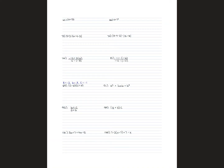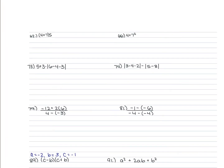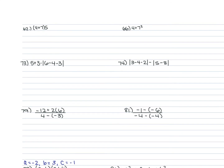For the next set we're simplifying expressions using order of operations. For 62, we have (4 + 7) × 5. Do what's inside the parentheses first: 4 + 7 = 11, then 11 × 5 = 55. For 66, we have 4 + 7². The exponent comes first: 7² = 49, then 4 + 49 = 53.